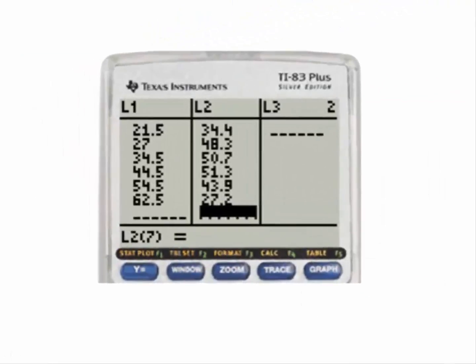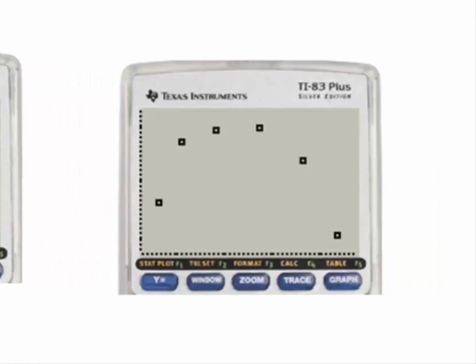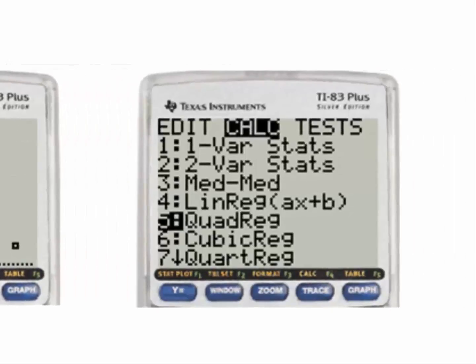First we have to put the data in list 1 and list 2. Next we create the scattergram. This looks like a quadratic pattern. Hit stat, then calculate, then number 5, quadratic regression.